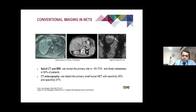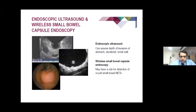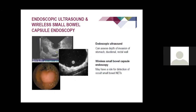The first investigation is generally conventional CT scan or MRI for staging. When there is a diagnosis, CT enterography may be needed to find the primary in the small bowel, with good sensitivity and specificity. The liver metastases are easily diagnosed on CT scan. Endoscopic ultrasound and small bowel capsule endoscopy are sometimes required to assess the depth of invasion for small lesions, helping determine eligibility for endoscopic resection.